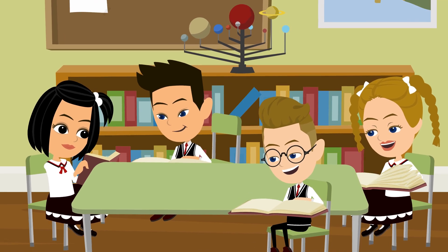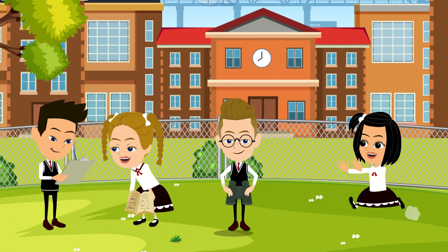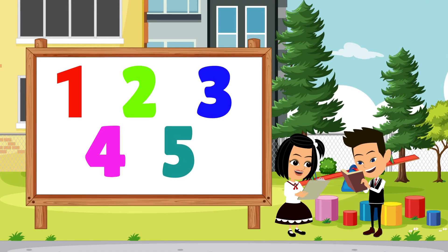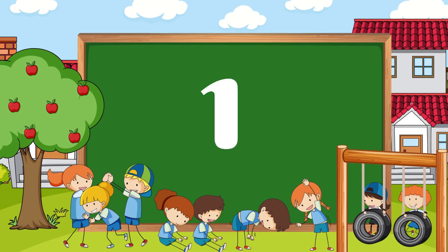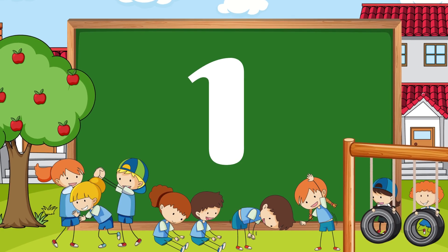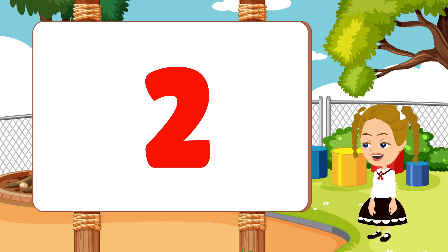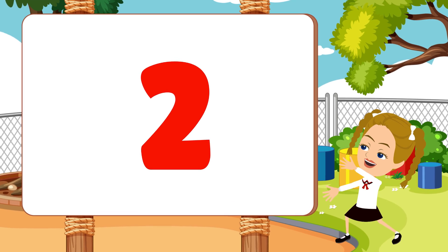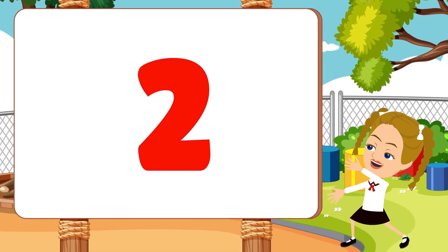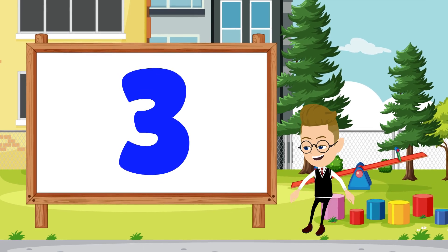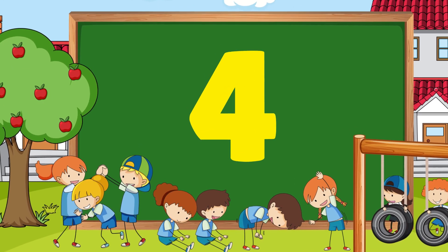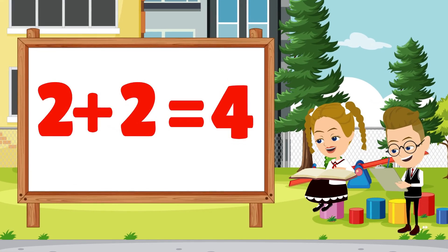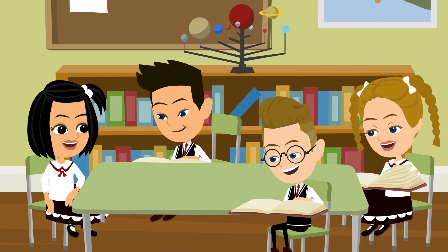Odd or even, what do you say? Let's find out, count and play! One, two, three, four, five — let's check if they're odd or even. One is odd, stands alone. Two is even, with a friend it's known. Three is odd, it makes a line. Four is even, two and two is fine. Odd or even, what do you say? Let's find out, count and play.